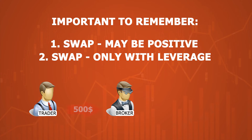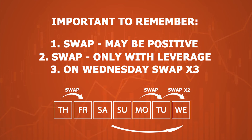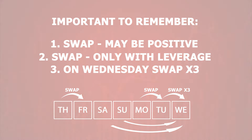A swap is only applicable when trading on margin using leverage. Forex settles on a T plus two basis. In this case, positions held over a Wednesday night are charged triple — covering Friday, Saturday, and Sunday. However, positions held over three nights at a weekend are only charged for one night.